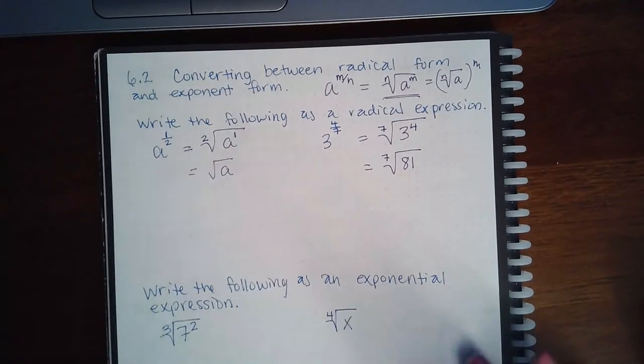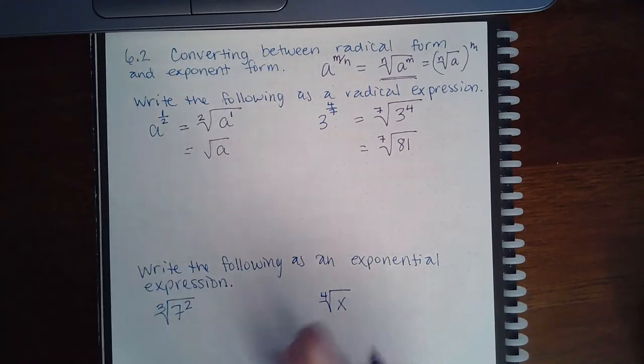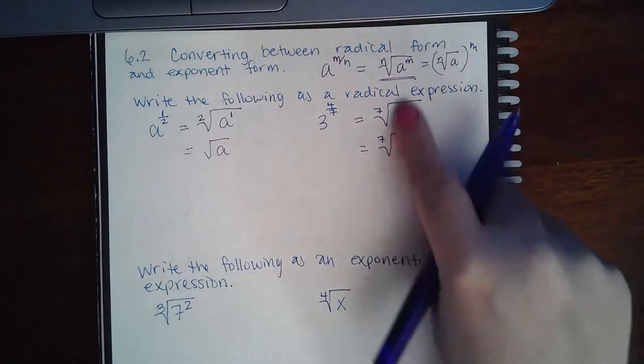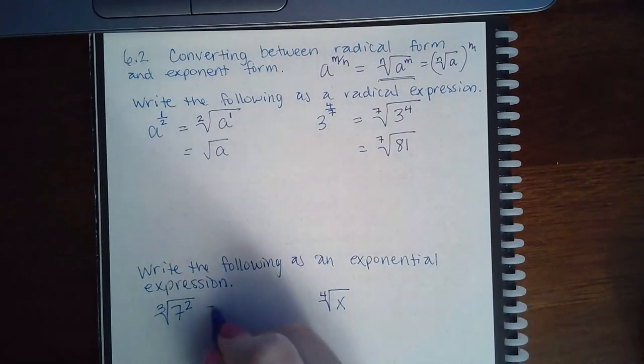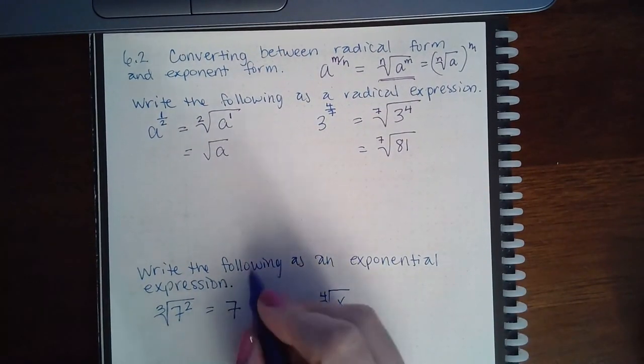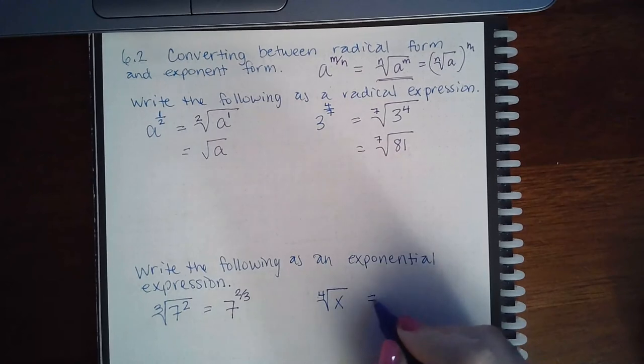Now for the bottom, it wants us to take these and put them into radical form. So they're already in this form, we're going to convert them into this. So all I have to do is rewrite the base and then put the exponent in the numerator and the index in the denominator.